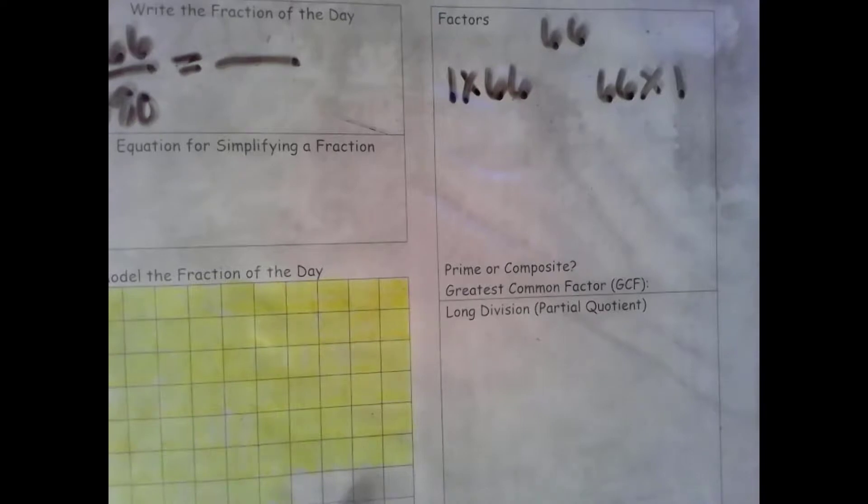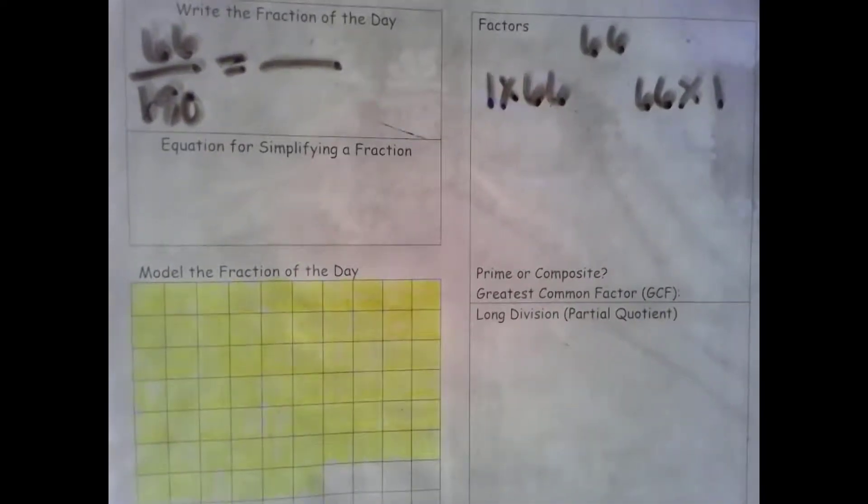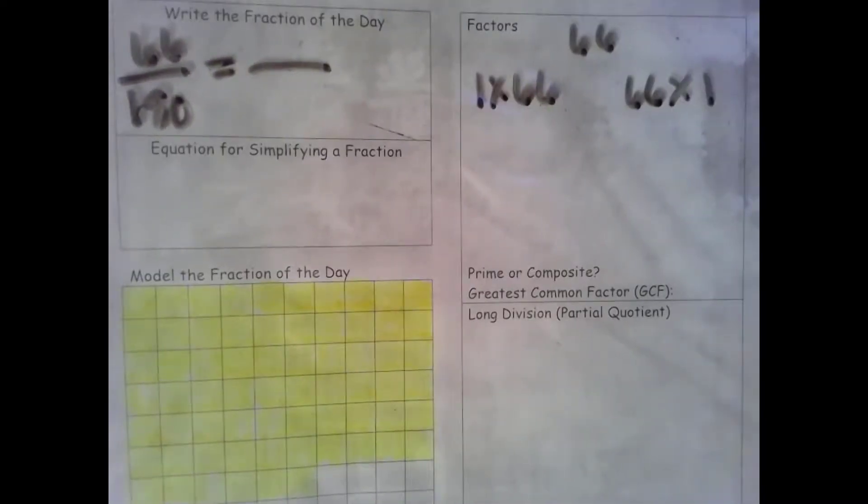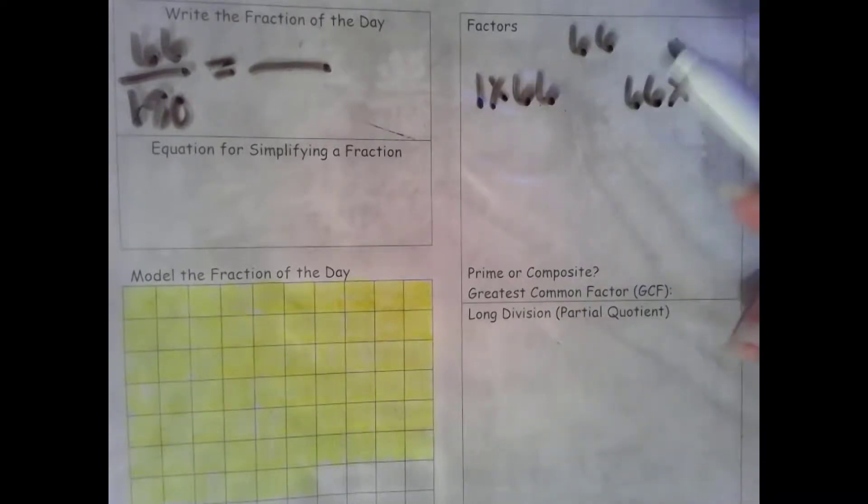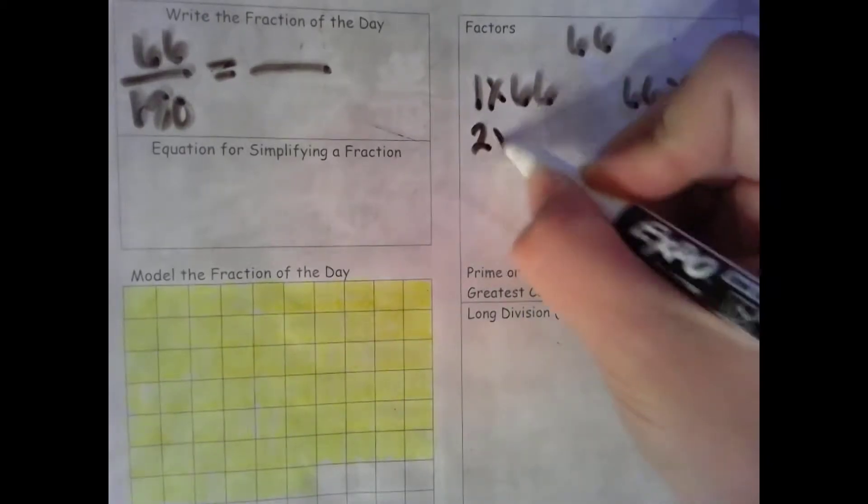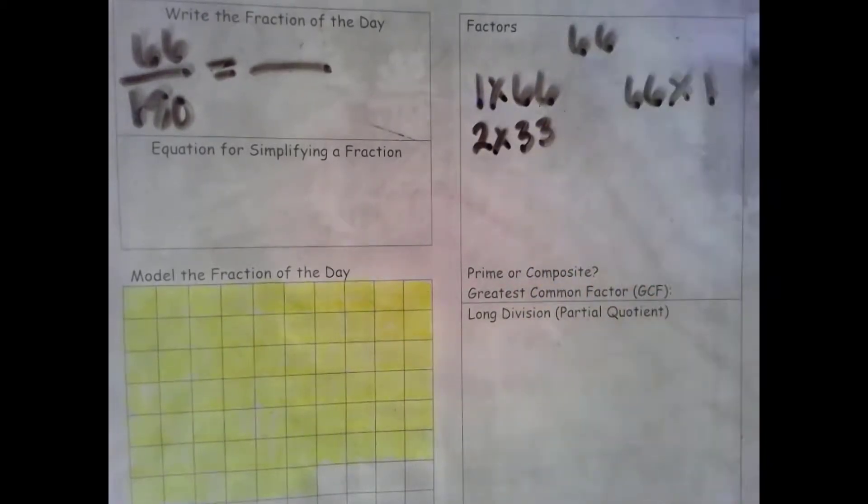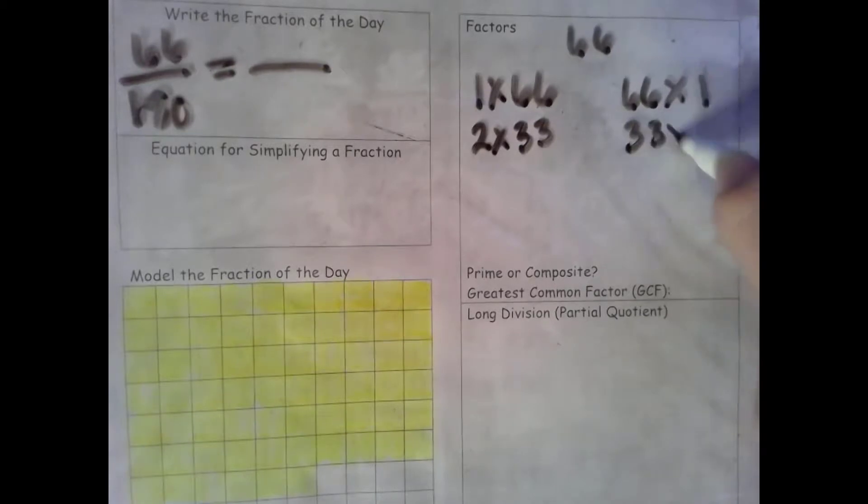Now I'm going to go through my divisibility rules in order so that I don't miss any possible factors. In order after 1 we try 2. The rule for 2 is that it ends in an even number. It does. 6 is even so 2 is a factor. 2 times 33. 33 times 2.